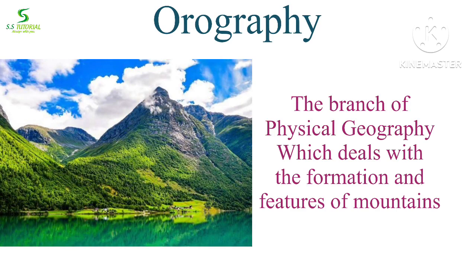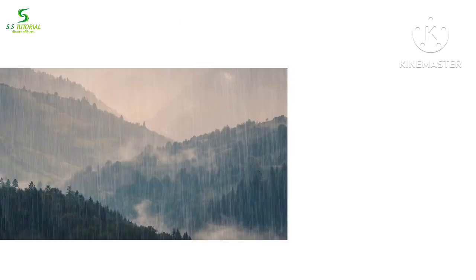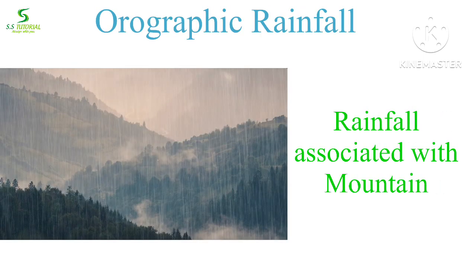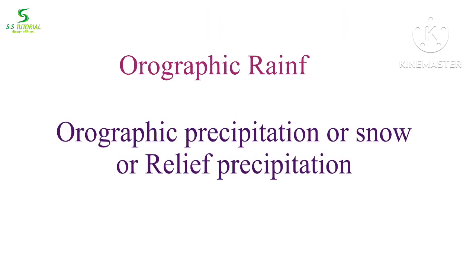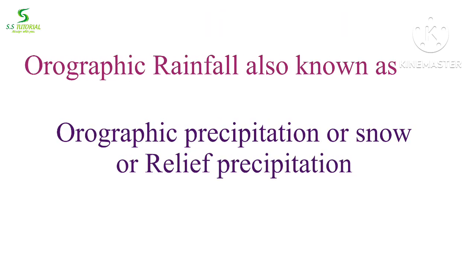Orography means the branch of physical geography which deals with the formation and features of mountains. Orographic rainfall means the rainfall which is associated with mountains. It is also known as orographic precipitation, snow, or relief precipitation.